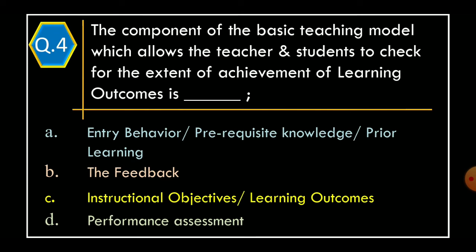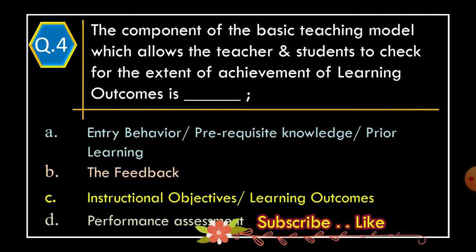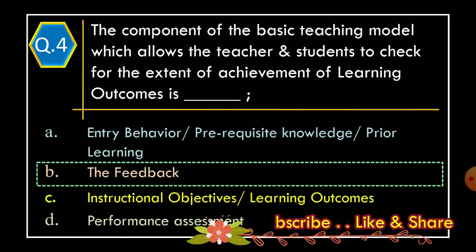Question 4. The component of the basic teaching model which allows the teacher and students to check for the extent of achievement of learning outcome is: Option A – Entry behavior or prerequisite knowledge or prior learning. Option B – The feedback. Option C – Instructional objectives or learning outcomes. Option D – Performance assessment. The correct option is Option B: The feedback.